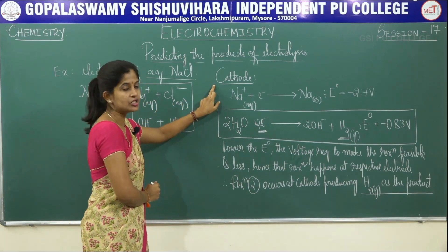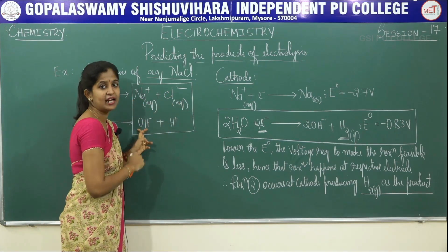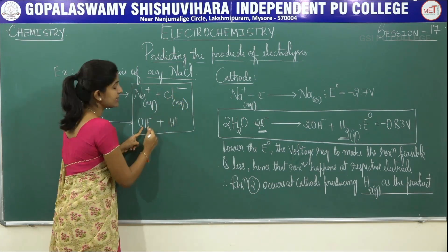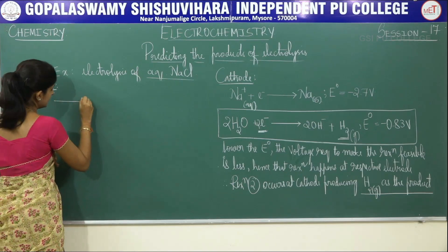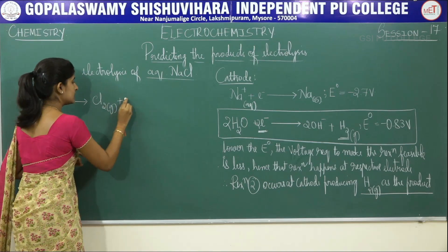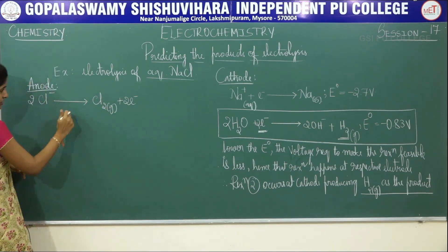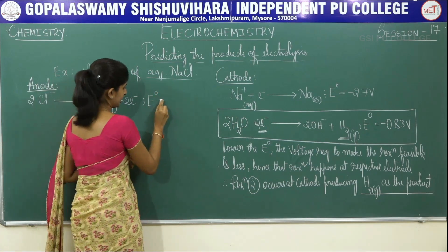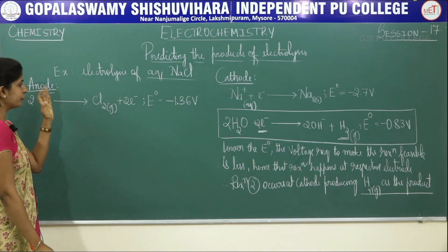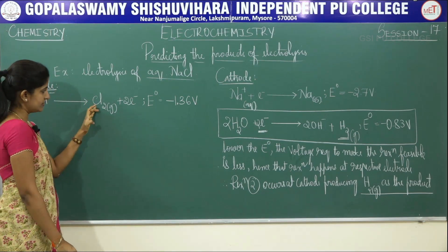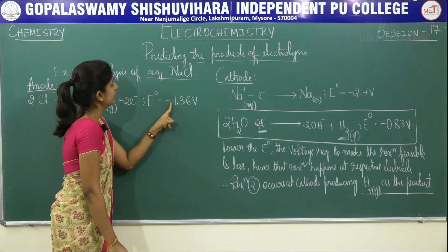In the same way, taking the anodic reactions — what are the anions that move towards anode? There are two anions: Cl- and OH-. They move towards anode and undergo oxidation. First anodic reaction: 2 Cl- give rise to Cl2 gas plus 2 electrons. Two electrons are removed from 2 moles of Cl- to get Cl2 gas. The standard reduction potential of this reaction is -1.36 volts.